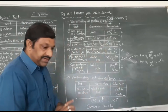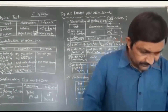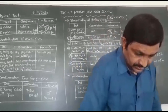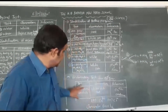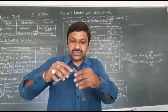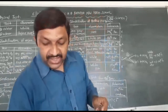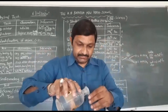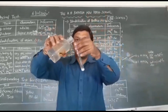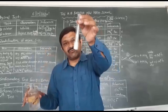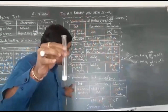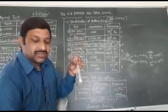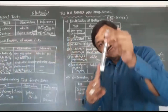Finally, the confirmatory test: original solution plus ammonium oxalate — white PPTs are obtained. Here is your ammonium oxalate. You can see white PPTs obtained. So your confirmatory test of Ca²⁺ is: original solution plus ammonium oxalate → white PPTs obtained. Confirmatory test is complete.